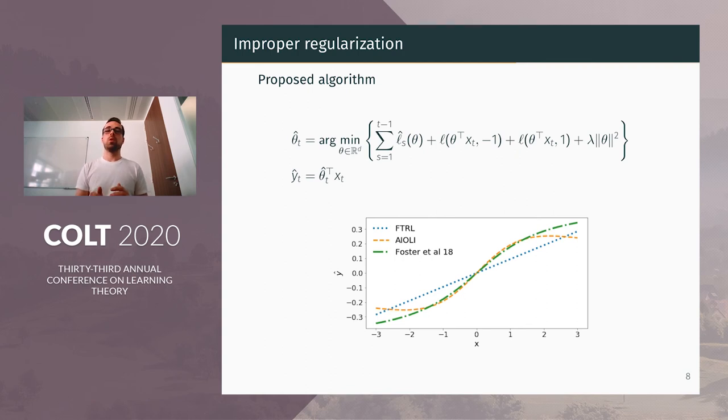Our estimator is a minimum of a convex function, composed of the sum of the quadratic approximation of the previous losses. So here L-hat is the quadratic approximation of the logistic loss. Plus two terms, which correspond to two possible losses at instant t, for two possible outputs, minus one and one. Then we predict θ-hat_t · x. But it's important to remark that this prediction function is not linear.